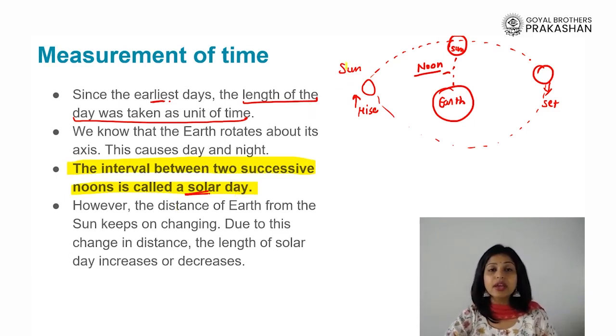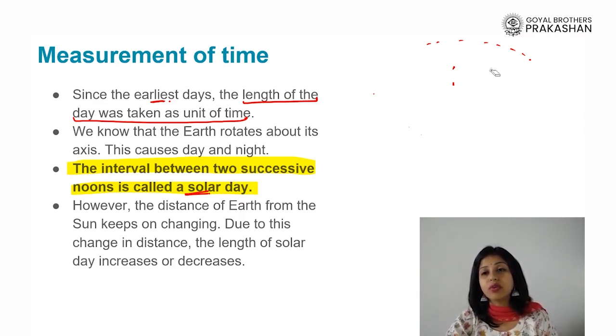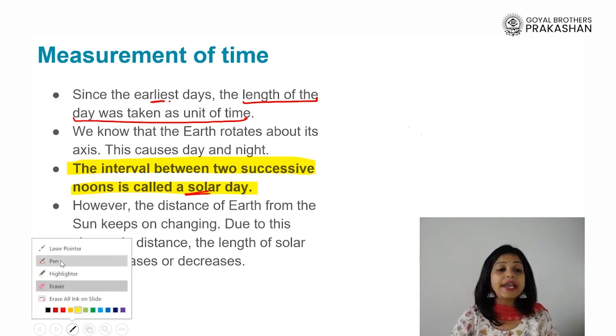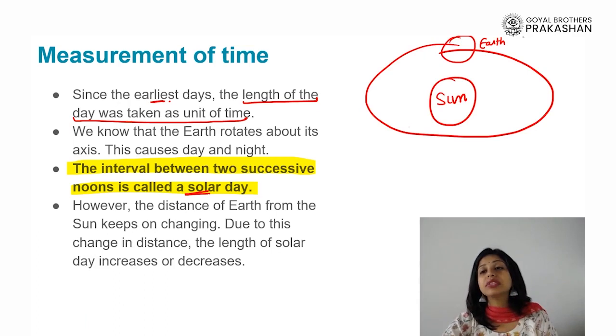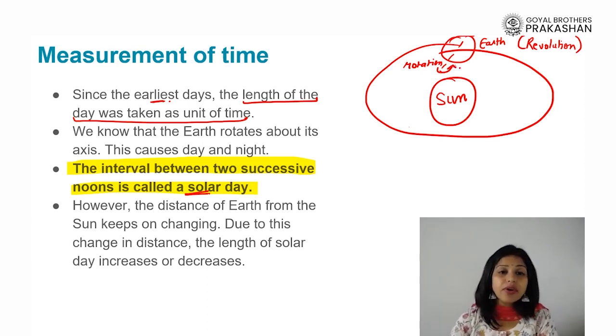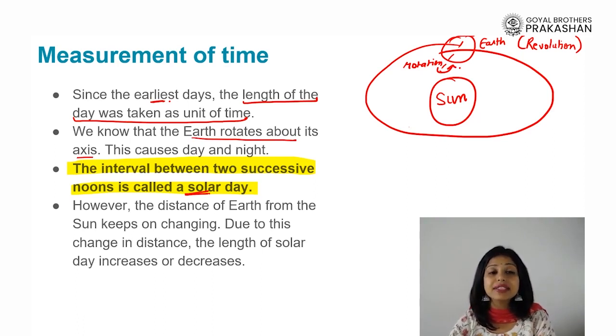The interval between two successive noons is what they defined as a solar day. Now, we know what is more true here? The more true thing is that not this earth, but it is the sun which is situated at the center. When we talk about the actual movement, who does go around whom? The sun is at the center and the earth goes around the sun. This thing that we see that earth going around the sun is called the revolution. Whereas, we see the setting and the rising of sun because of the rotation of the earth on its own axis. When we talk about earth rotates about its own axis, that is the cause of the day and night.